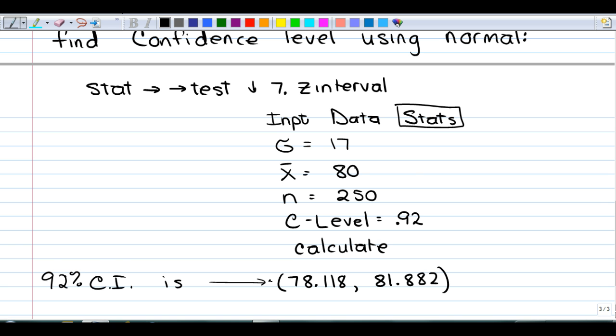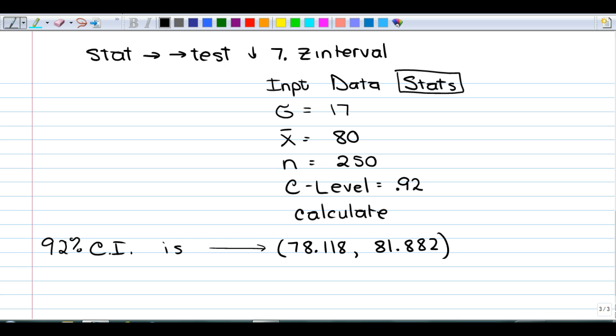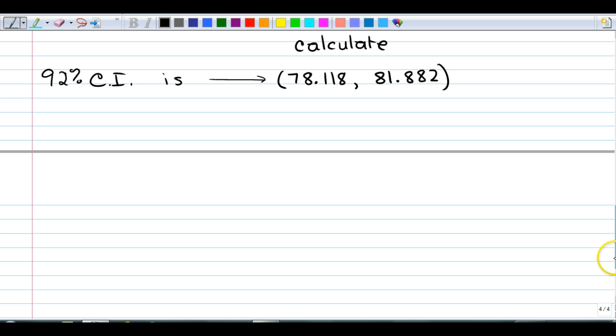However, we usually have to use a t-interval. They don't let us use z-intervals as often as they used to, because we rarely know our population standard deviation.